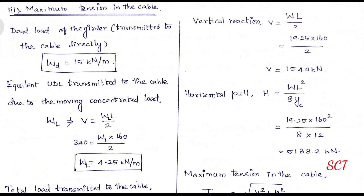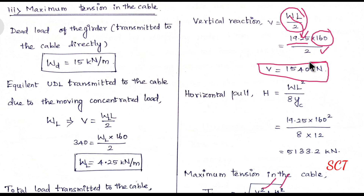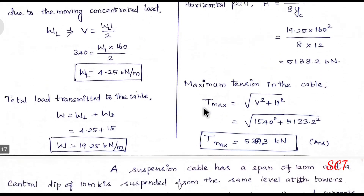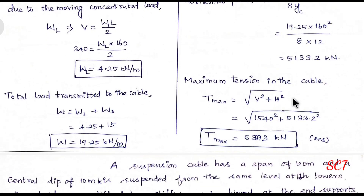To find T-max, use the formula: T = √(V² + H²). Calculate V = WL/2 = 19.25 × 160 / 2 = 1540 kN. Then horizontal pull H = WL² / (8 × Yc) — substituting W, L, and Yc gives H = 5133.2 kN. Therefore, maximum tension T-max = √(1540² + 5133.2²) = 5359.3 kN.